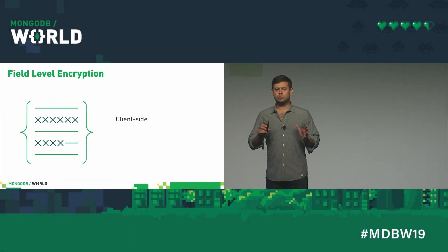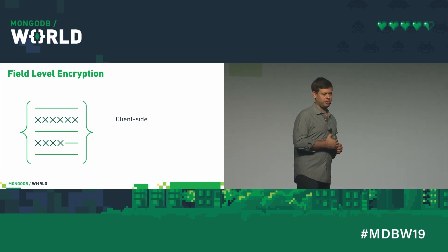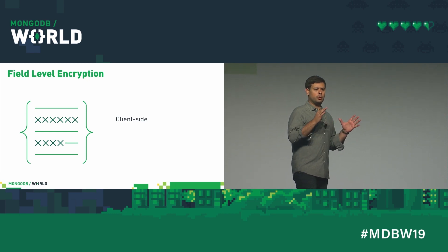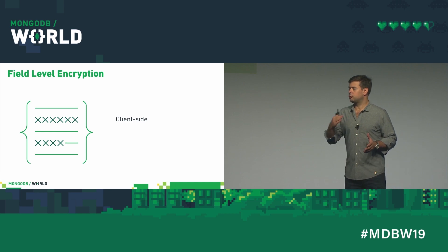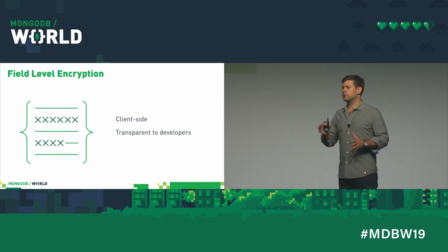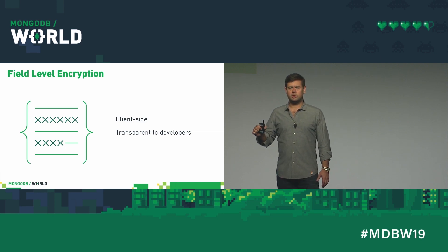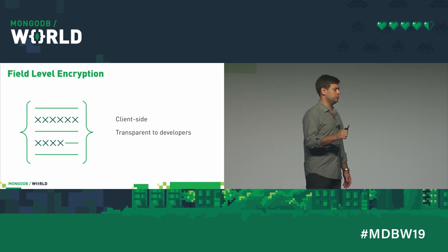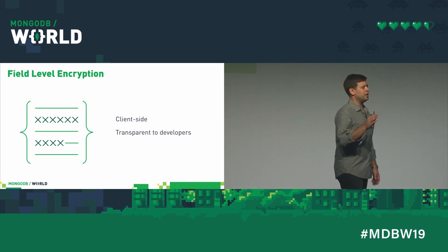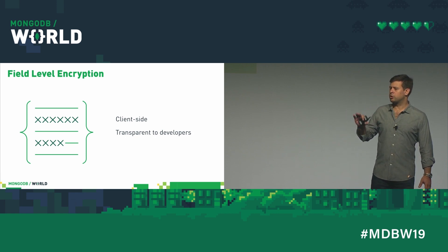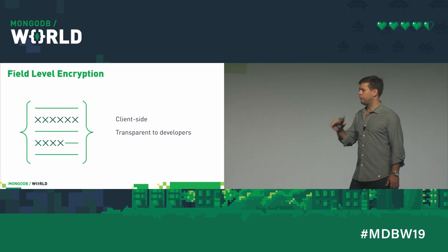Field level encryption happens entirely client side. It's built into every single MongoDB driver. The driver will encrypt the data before it leaves the driver, and it will only be decrypted when it gets back to the driver. This all happens completely transparently to the developers. The MongoDB API doesn't change. You configure this when you configure the connection, and then when you insert a document using the exact same API, behind the scenes the driver is going to encrypt the fields you want encrypted and send it to the database.